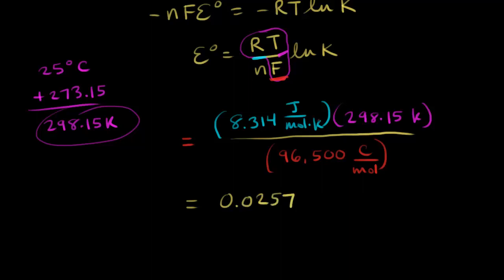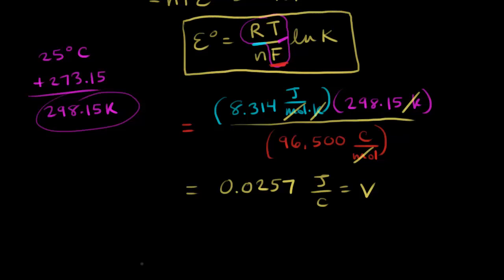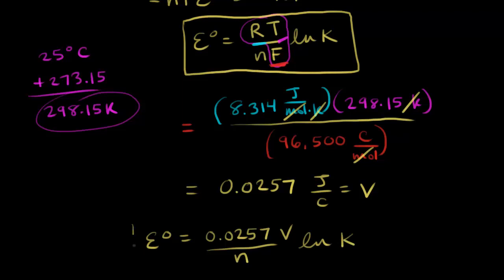What are the units? Kelvin cancels out, moles cancel out, and we're left with joules over coulombs, which equals volts. So we can rewrite our equation: the standard cell potential, E zero, equals 0.0257 volts over N — where N is the number of moles of electrons transferred in the redox reaction — times the natural log of K, the equilibrium constant.